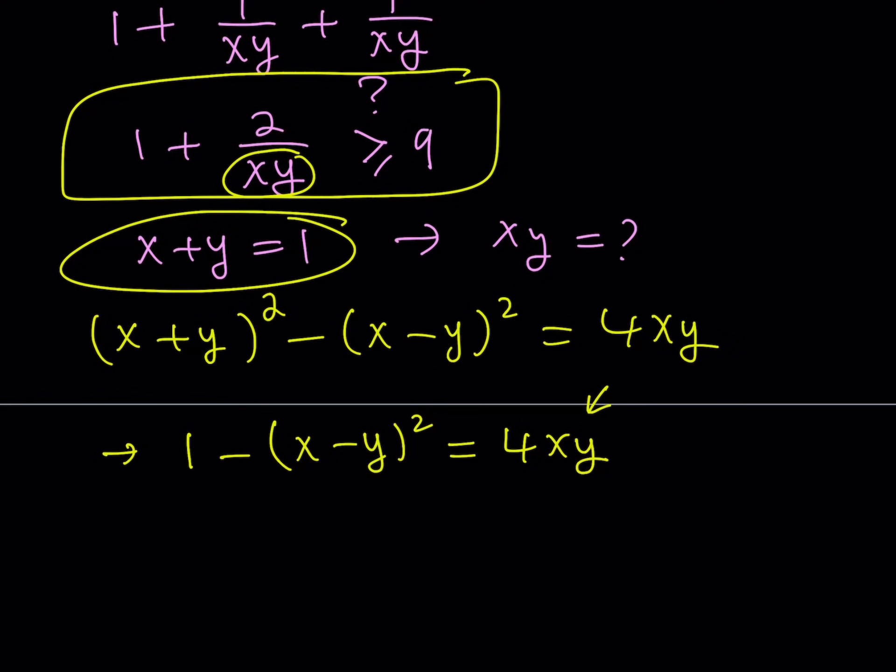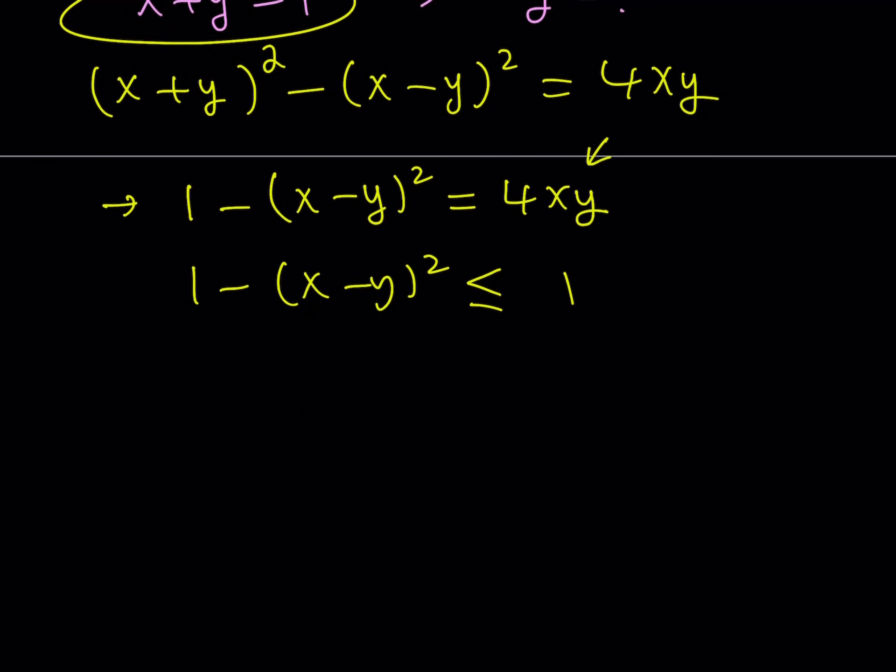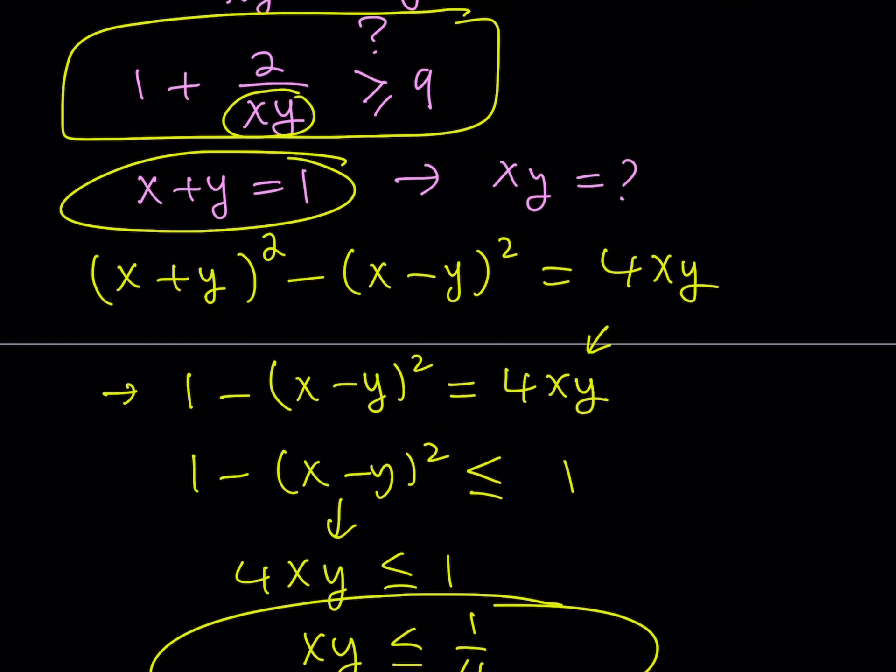Well, it means that this expression right here is going to be less than or equal to 1 because you're subtracting a non-negative number from 1. And so, the answer is either going to be 1 or less than 1 because you're basically decreasing it if x minus y does not equal 0. Okay, so, we can safely say that 1 minus the quantity x minus y squared is less than or equal to 1, which means that 4xy, because it's equal to that, is less than or equal to 1, which means xy is less than or equal to 1 fourth.